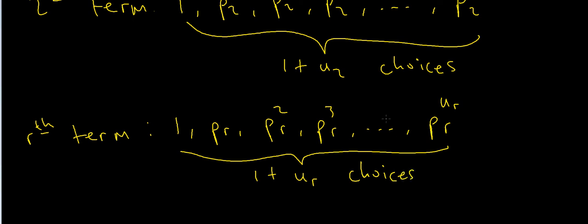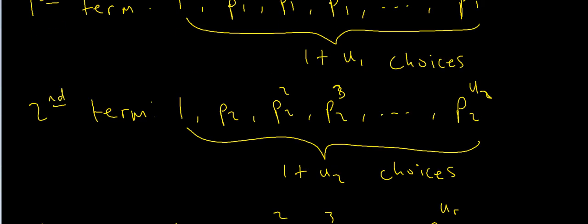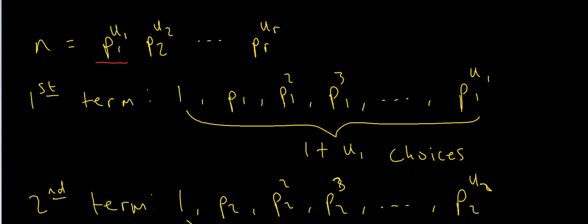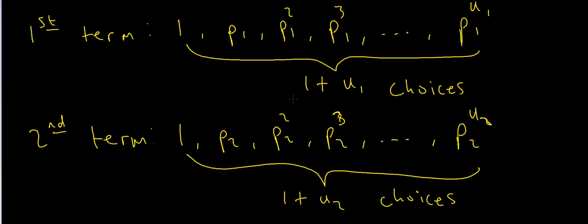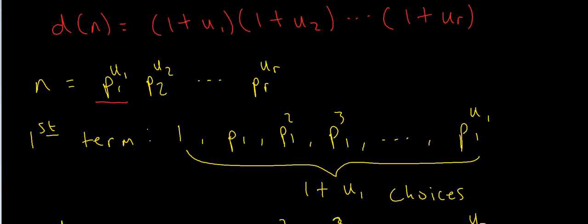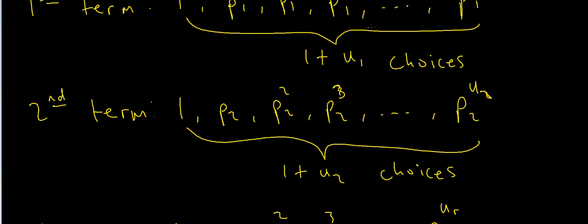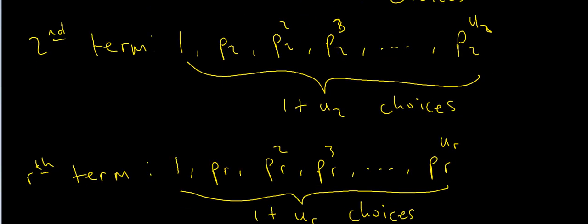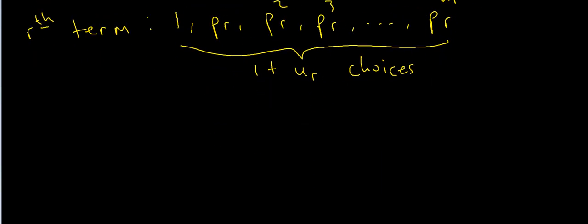Now we want to find the value of d(n), and to do that we need to find the total possible number of choices. The way we do that in combinatorics is to multiply all the possibilities together. We have 1+u1 ways to arrange the first term and 1+u2 ways for the second term. If there are six ways to arrange the first term and five ways for the second, you multiply six by five to get the total. So the total number of arrangements is (1+u1) times (1+u2) times (1+u3) all the way up to (1+ur).